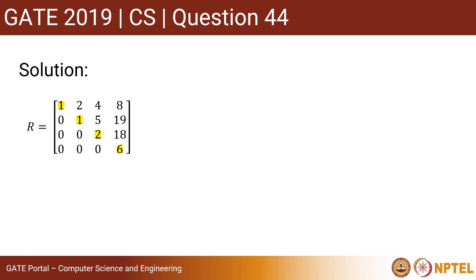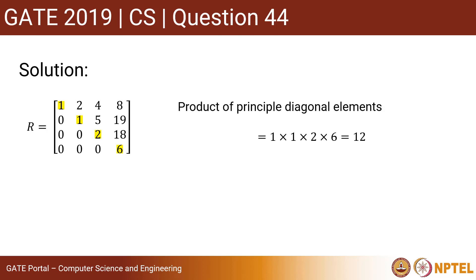The diagonal elements are 1, 1, 2, and 6. Since the diagonal elements of an upper triangular matrix are its eigenvalues, the product of eigenvalues is 1 × 1 × 2 × 6 = 12. So the answer to this question is 12.